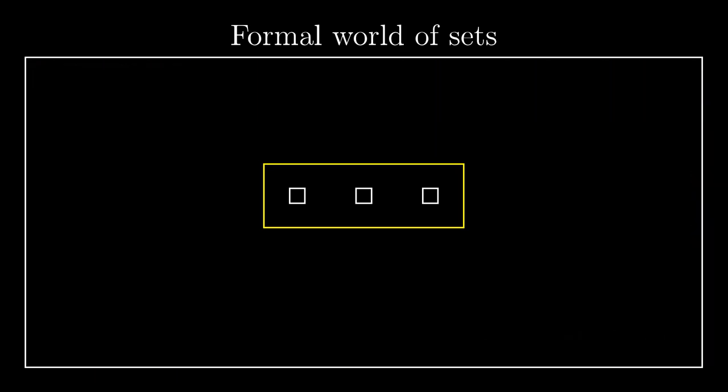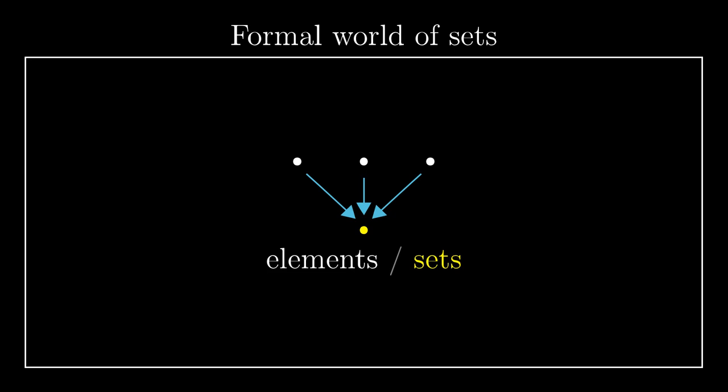The entire world of sets can be also seen as an enormous directed graph. The vertices represent sets and edges the set membership. So sometimes we will call the objects of the formal world of set theory sets, sometimes elements, but formally they are the same. The only difference is in the way we perceive them.